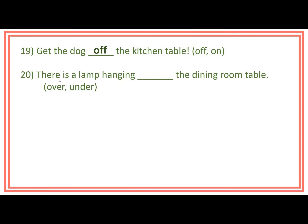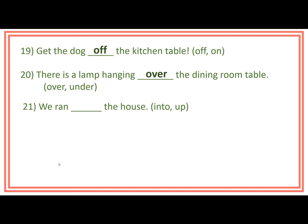Number 20: There is a lamp hanging ___ the dining room table. Prepositions inside the bracket are over and under. Answer: There is a lamp hanging over the dining room table. Number 21: We run ___ the house. Prepositions inside the bracket are into and up. Answer: We run into the house.